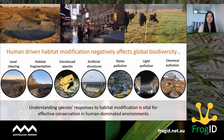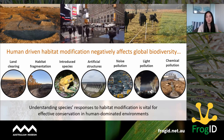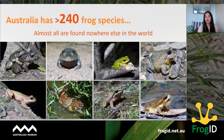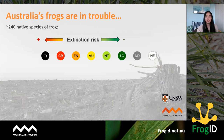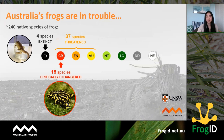Unfortunately, this information is lacking for certain groups of animals — frogs in particular. In Australia we are lucky to have such a wonderful diversity of frog species. We have over 240 native frog species and almost all of them are found nowhere else in the world. But Australia's frogs are in trouble. Four species are already extinct, 15 species are critically endangered, and 37 species are threatened — that's about one in six of our frog species.